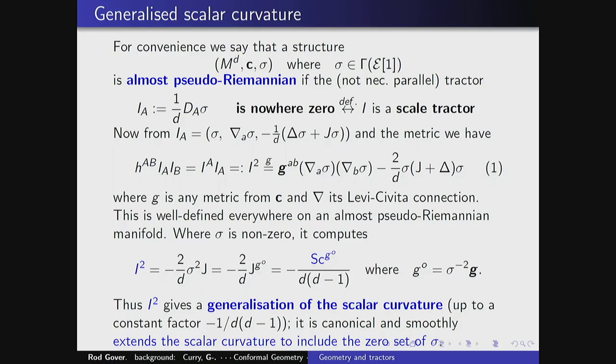We want to understand the zero set, because if you have a parallel tractor, then on an open dense set it determines an Einstein metric, and where it's zero, that's some sort of conformal infinity. I'll introduce terminology: if you have a conformal manifold equipped with a density of weight one σ, I'll call it almost pseudo-Riemannian if the image under the D operator is nowhere zero. We call I then a scale tractor. The Thomas D operator is conformally invariant — the map from σ to that triple is a conformally invariant operator.